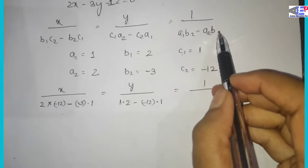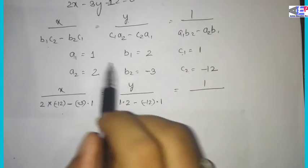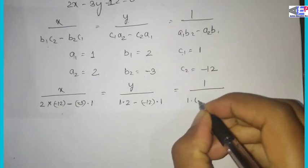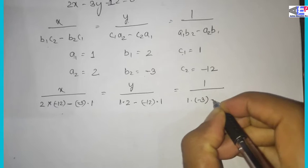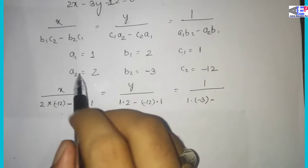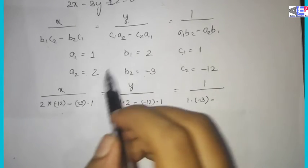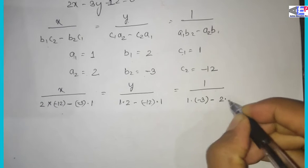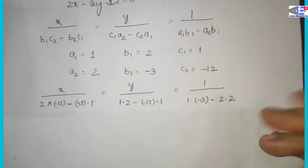For y: c1·a2 minus c2·a1 — that is 1 into 2, minus minus 12 into 1. And for the denominator: a1·b2 minus a2·b1 — that is 1 into minus 3, minus 2 into 2.